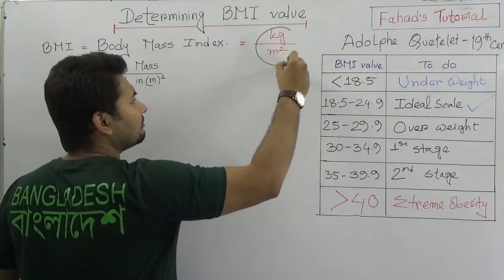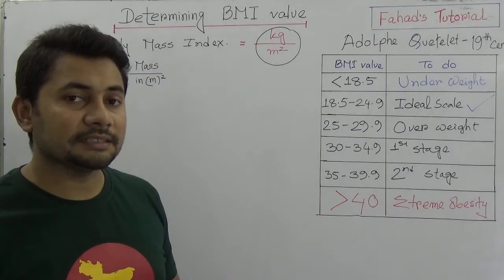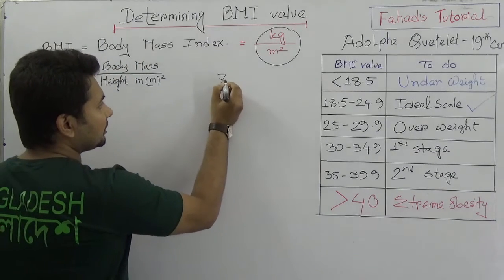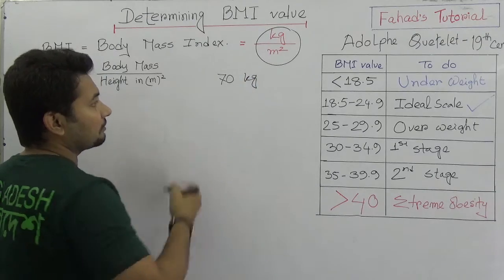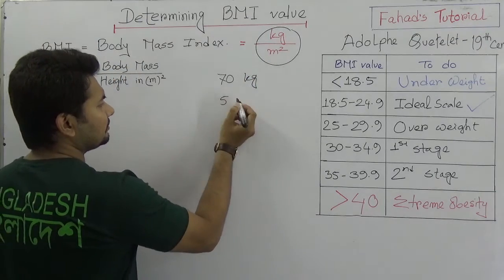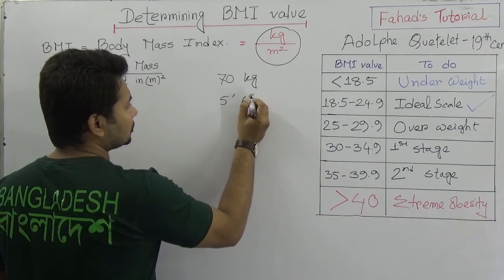So how to determine this BMI? You see they are kilogram per meter square. Suppose a person's body mass is 70 kilograms. If I say that person's body mass is 70 kilograms, but the height is given as suppose she is 5 feet 6 inches.